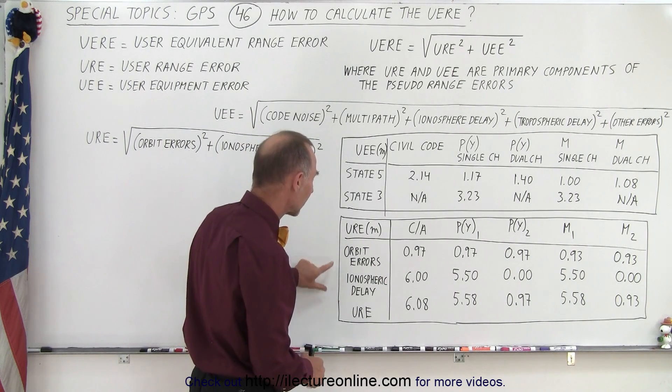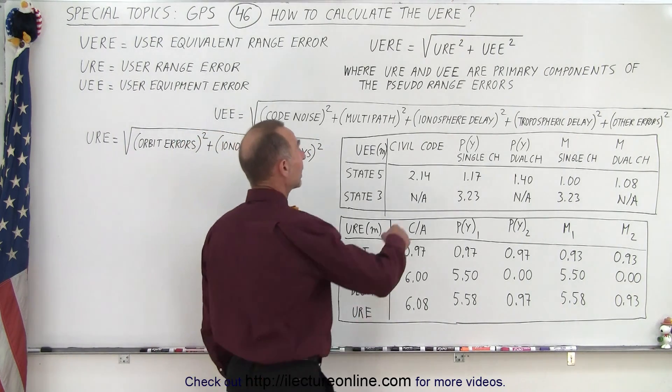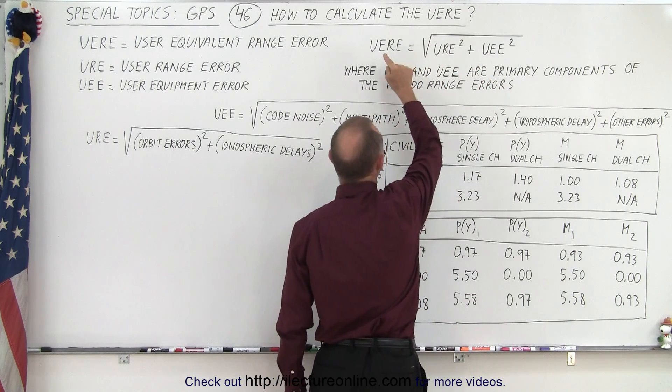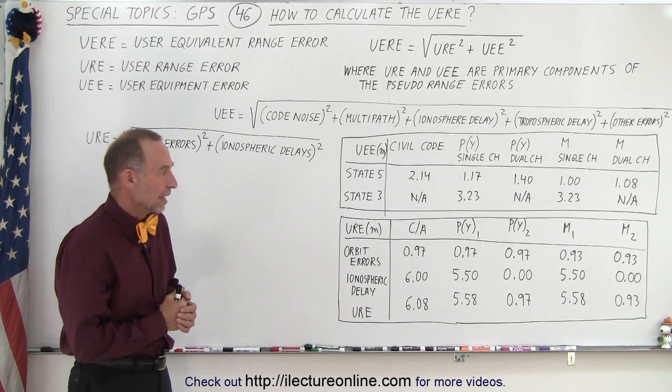The orbit errors still count, but the ionospheric errors are therefore removed. And then what we do is we take the URE number squared plus the UEE number squared, added together, and that gives us the UERE. And that is typically used in GPS.